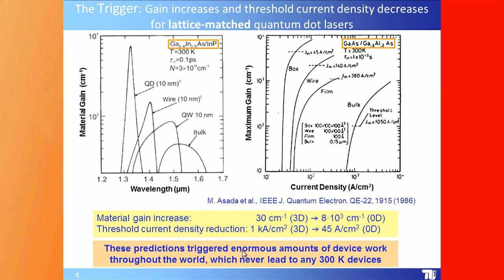The trigger of all this work was a PhD thesis at the Tokyo Institute of Technology by Asada, published in 1986. It reported modeling of the material gain as a function of wavelength for bulk, quantum wells, quantum wires, and quantum dots for the GaAs/InAs/InP lattice-matched material system. The bulk material gain goes up from 30 to about 8,000 reciprocal centimeters.